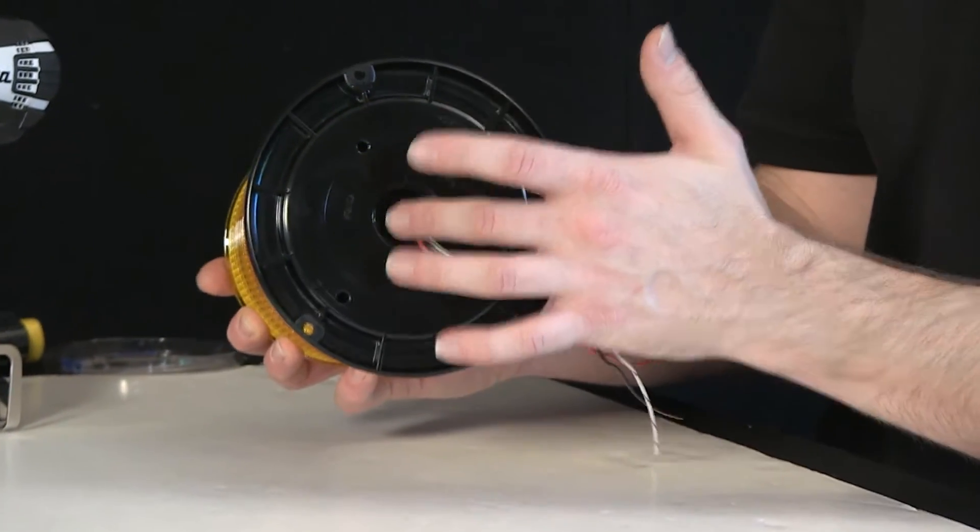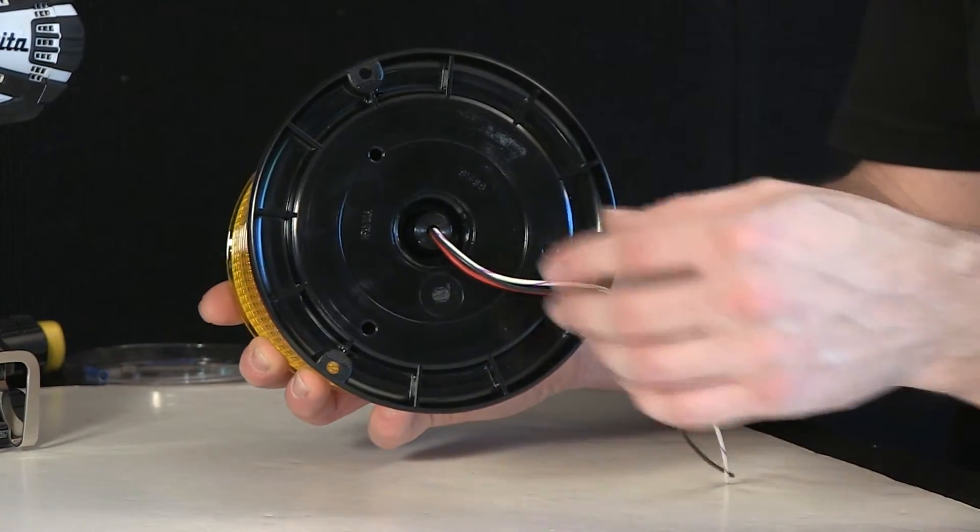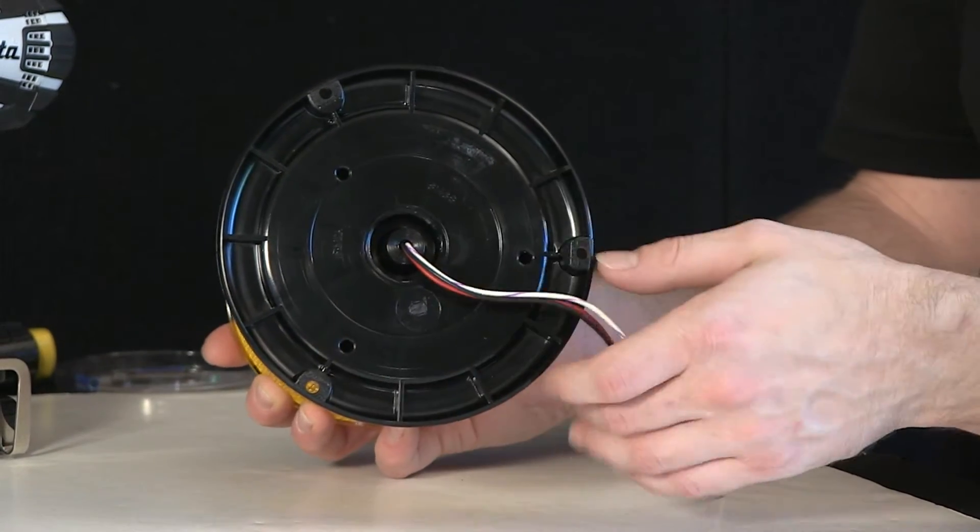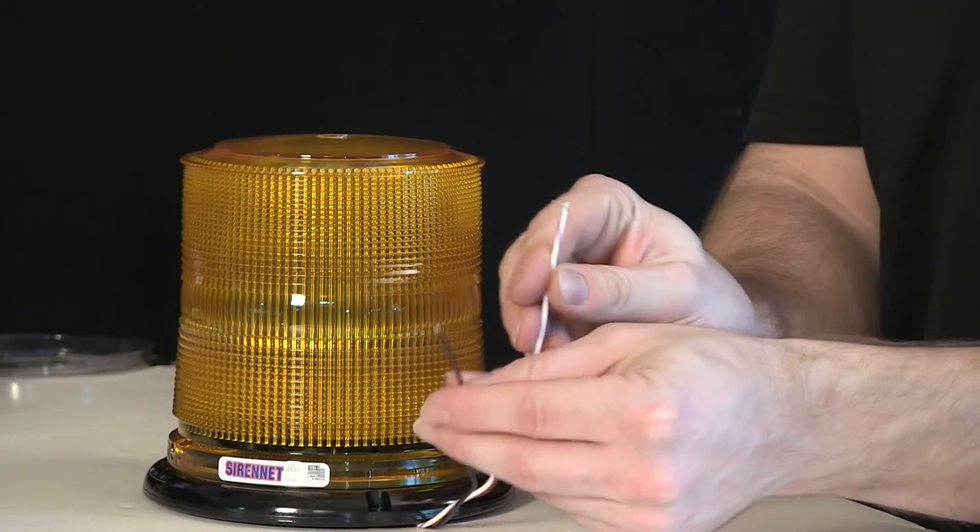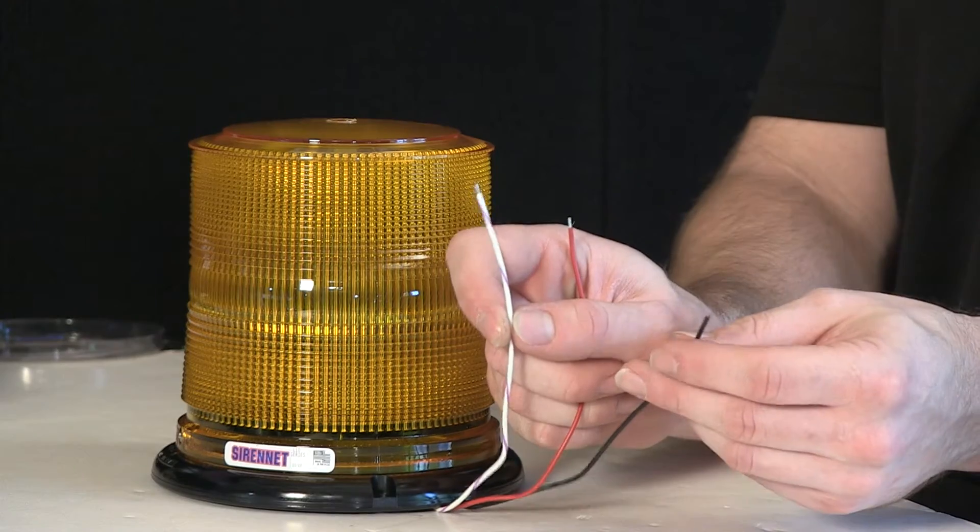Or if you'd like to affix it onto a one inch standard thread pipe fixture, it has that incorporated into the base assembly here. It's a three wire pigtail: a black ground, red lead, and a flash pattern change wire.